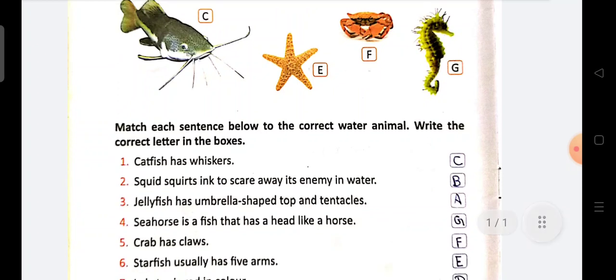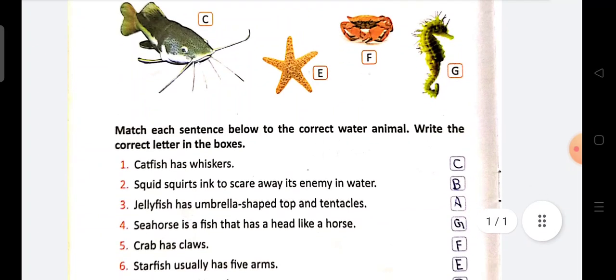Crab has claws. Tau dhekhte hai. Number F. Claws. Yeh picture me aap dhekhar hai. F number crab hai. Aur crab ke claws hootate hai. Panjay hootate hai. Next.